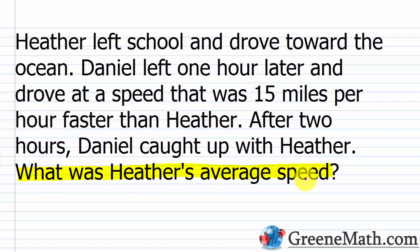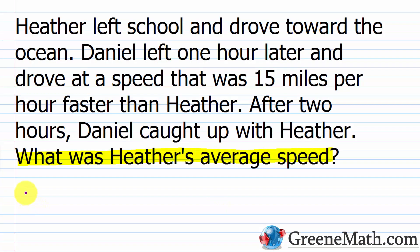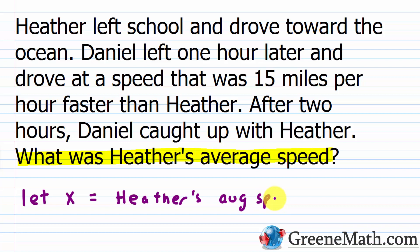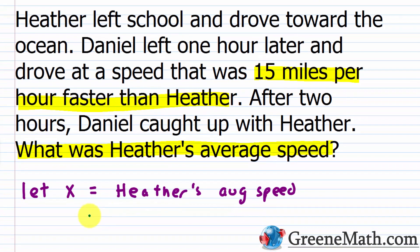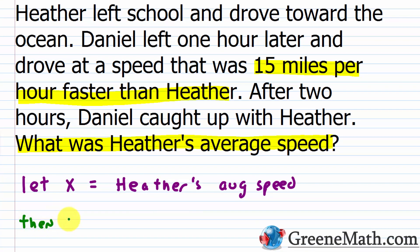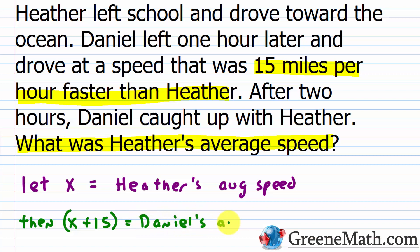Now we're ready to go through the problem. Let x be equal to Heather's average speed, in miles per hour. We need to model other unknowns in terms of x. The problem tells us Daniel is driving 15 miles per hour faster than Heather. So if Heather's average speed is x, then x plus 15 is Daniel's average speed.